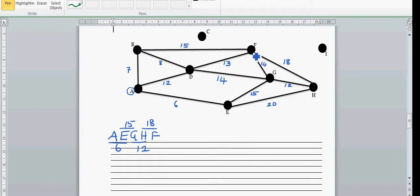Now from F, you can go from F to D and D to B, or F to B and B to D. 13 plus 8 is 21 and 15 plus 8 is 23. So it is better to go from F to D and D to B.